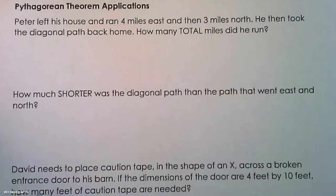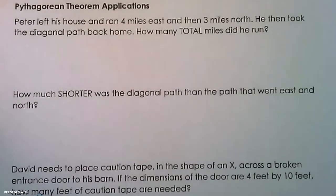Hey guys, in this video we are going to be looking at some different application problems for Pythagorean theorem. We'll jump right in with our first example. Peter left his house and ran four miles east and then three miles north. He then took the diagonal path back home. How many total miles did he run?